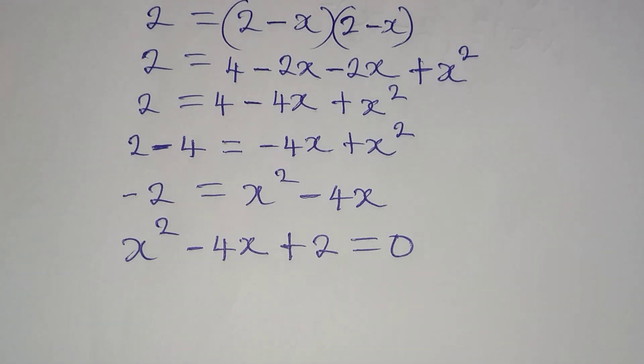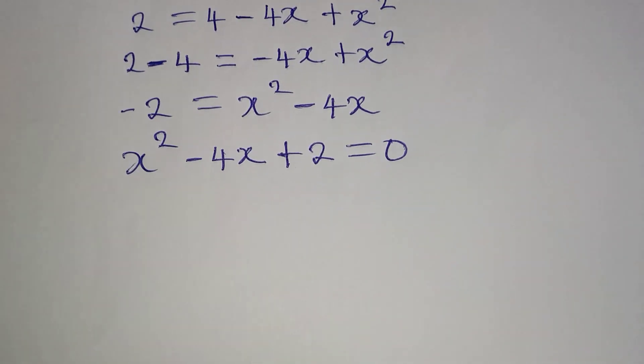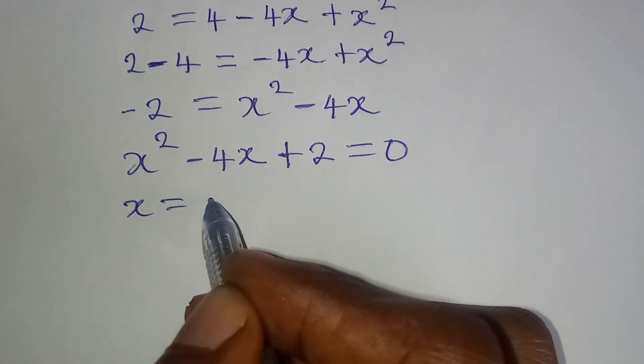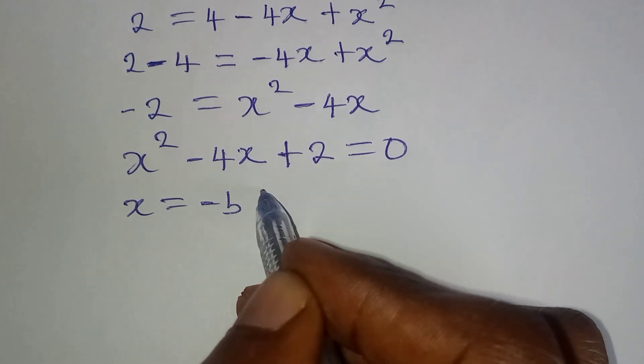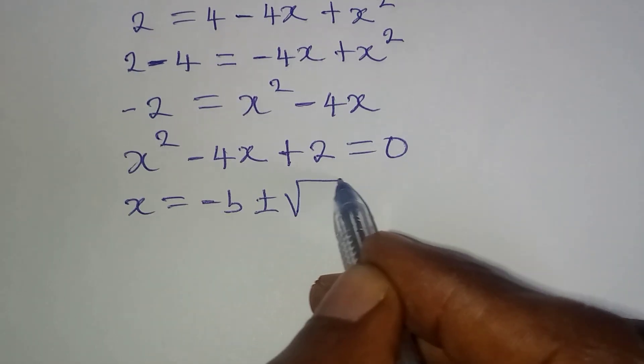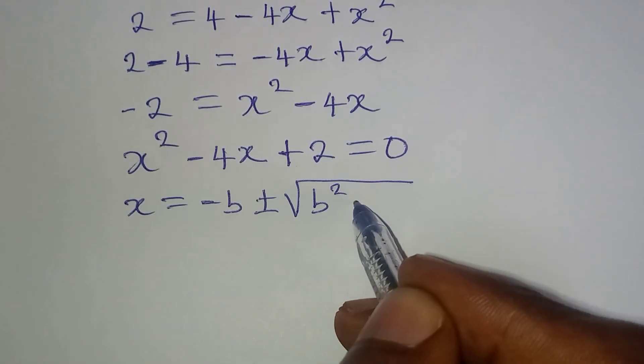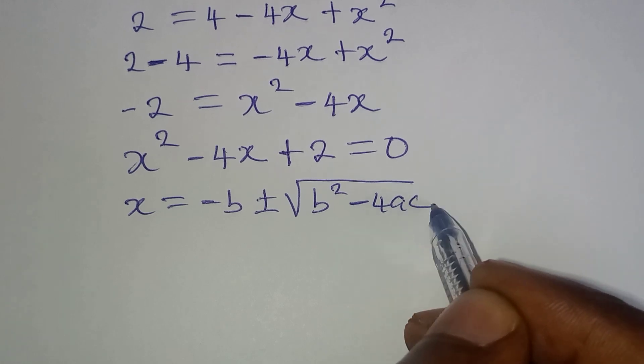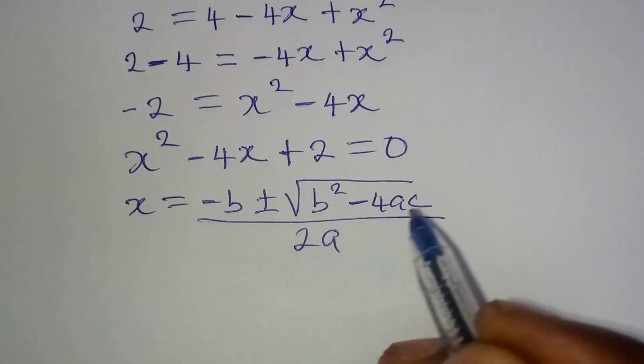Now we have a quadratic equation. And we are going to solve this using the formula method. The formula is x equals minus b, positive or negative, square root of b squared minus 4ac, everything over 2a.